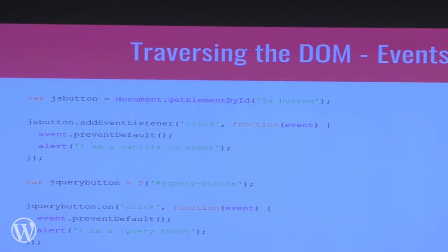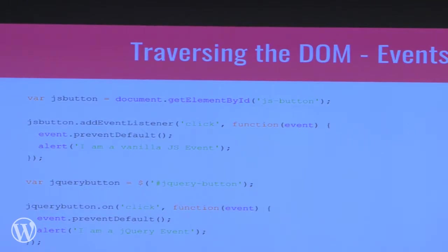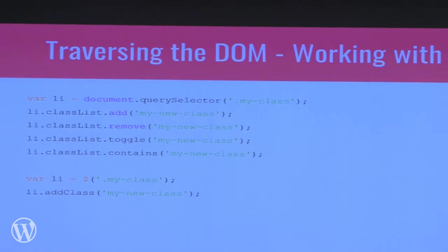For events, there's also document.getElementById — a special function that finds an element by ID. To register an event you use addEventListener, then add your event and function. Pretty much everything past addEventListener is exactly the same as what you do with jQuery. The same events exist in vanilla JavaScript, and changing over is pretty easy — instead of typing .on(), you're using addEventListener.